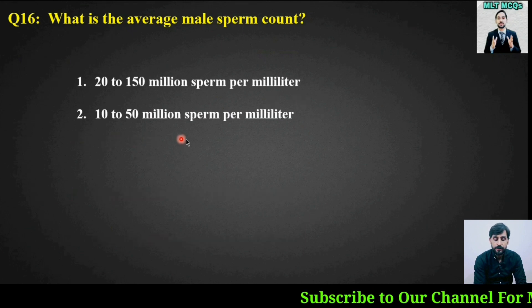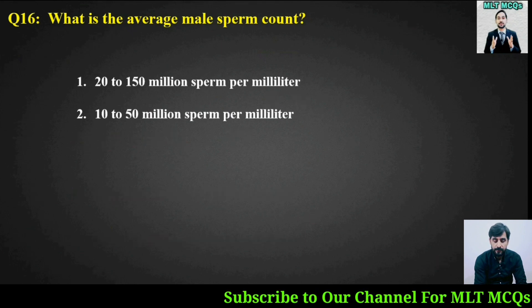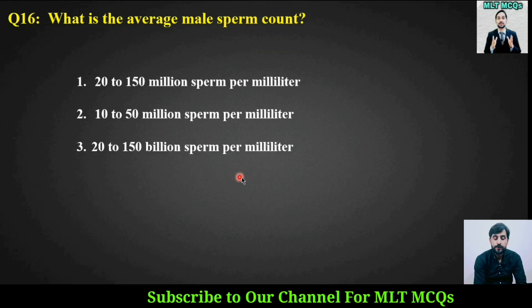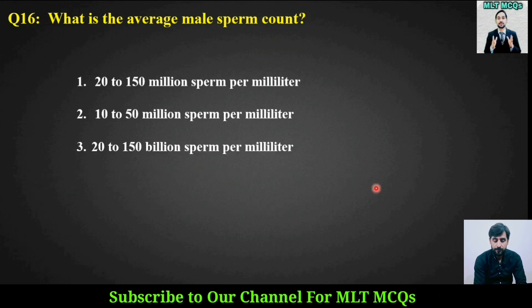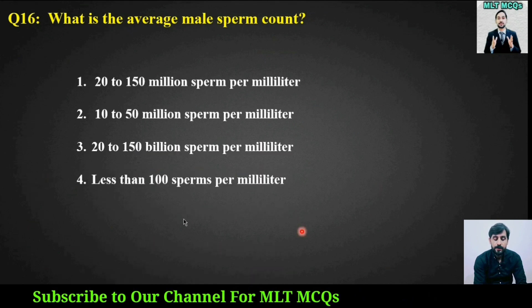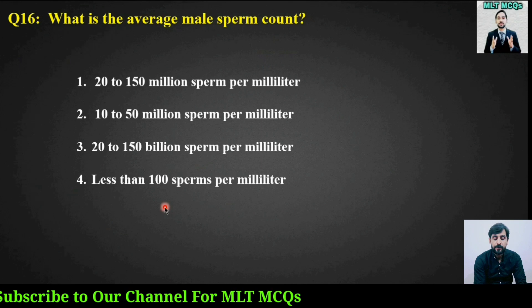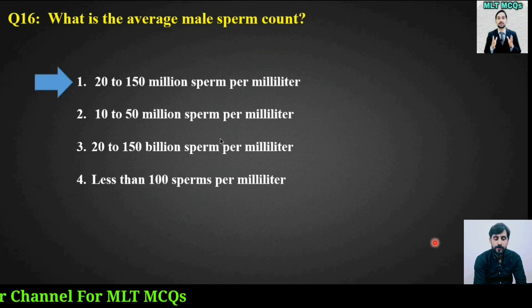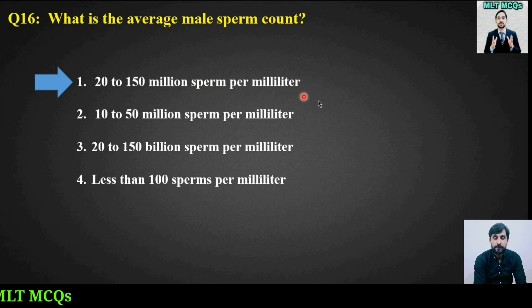MCQ number sixteen: What is the normal sperm count range? Options are: 10 to 50 million sperm per milliliter, 20 to 150 billion sperm per milliliter, or less than 100 sperm per milliliter. The right answer is option number one — 20 to 150 million sperm per milliliter.